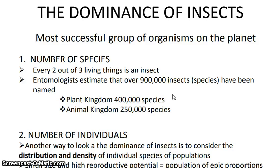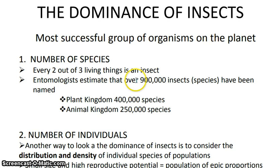This topic covers the reasons for the success of insects in diverse environments — why insects are so successful in different environments, whether terrestrial, aquatic, or aerial. There are various reasons to discuss regarding insect diversity and dominance. Insects are the most successful group on this planet because the number of species is enormous — every two out of three living things is an insect.